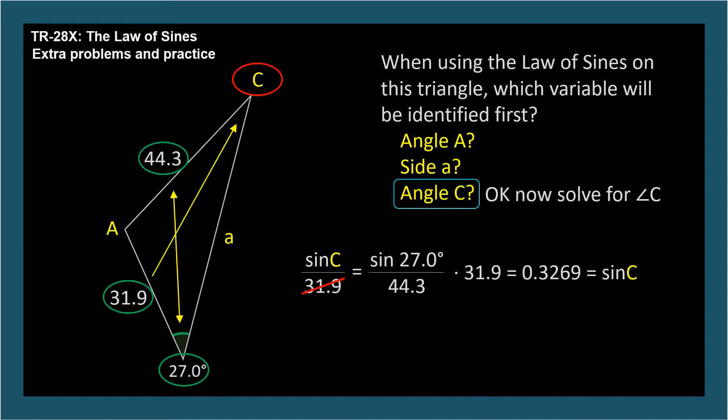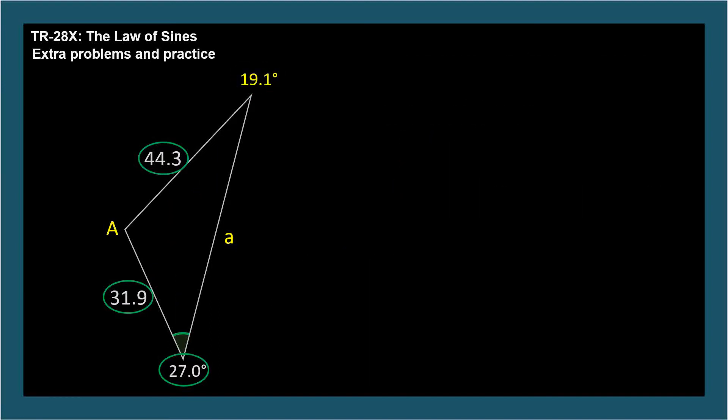Sine C equals 0.3269, so C equals arcsine 0.3269, or 19.1 degrees.